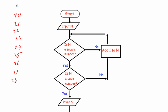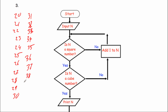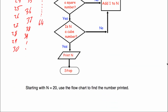We keep going: 27, 28, 29, 30... all the way to 36. Is 36 a square number? Yes. Is it a cube number? No — add one again. We continue: 37, 38, 39... all the way to 49. Is 49 a square number? Yes. Is it a cube number? No — keep adding. 50, 51 and so on, until we reach 64. Is 64 a square number? Yes. Is it a cube number? Yes — so we print it. The answer is 64.